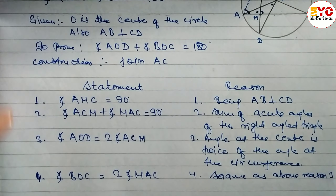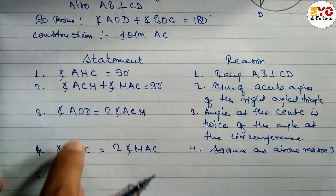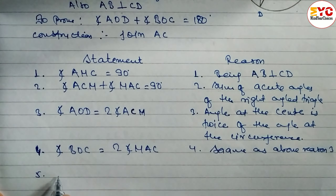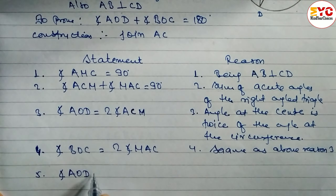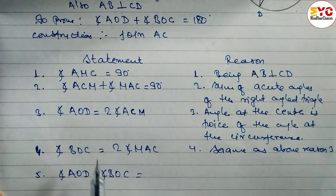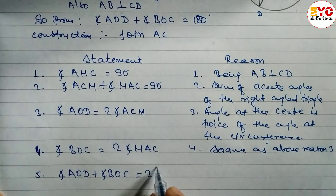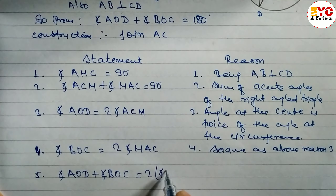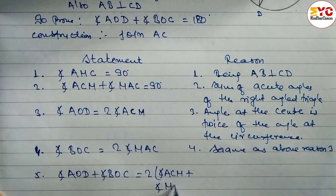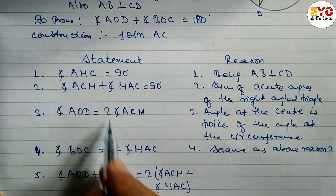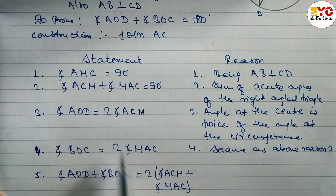Statement 5: Now we add statements 3 and 4. When you add, we get: angle AOD + angle BOC = 2∠ACM + 2∠MAC. We can take 2 as a common factor, since both terms have a factor of 2.